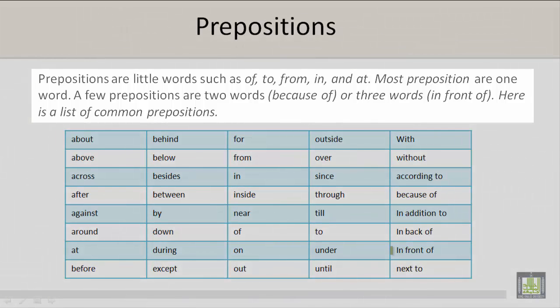Prepositions are little words such as of, to, from, in, and at. Most prepositions are one word. A few prepositions are two words, like because of, or three words, like in front of. Here is a list of common prepositions.